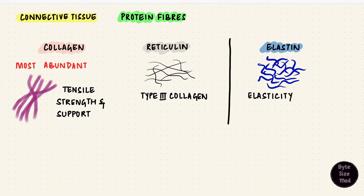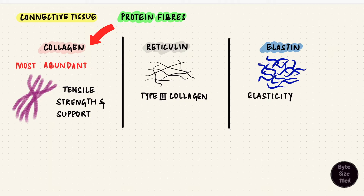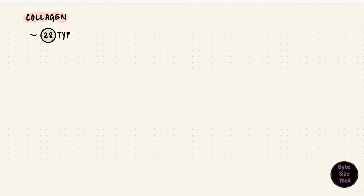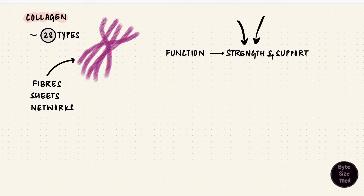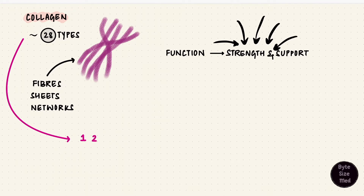These three distribute differently in different connective tissue, depending upon where that tissue is located and what its function is. Let's first look at collagen, which is what the majority of this video is on. There are lots of different types of collagen, around 28. They can form fibers, sheets, or networks. Their main function is to support and to resist the forces acting on these structures. Though there are many types, most collagen belongs to types 1 to 4.